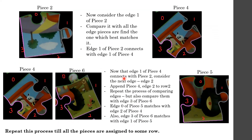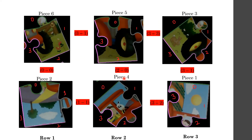These steps have been repeated for the selected example, and this is how the output looks. As you can clearly see, piece 2 edge 1 connects with piece 4 edge 1, piece 2 edge 0 connects with piece 6 edge 0, piece 6 edge 3 connects with piece 5 edge 1, and so on.